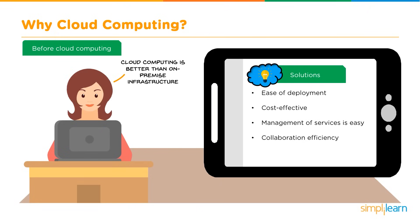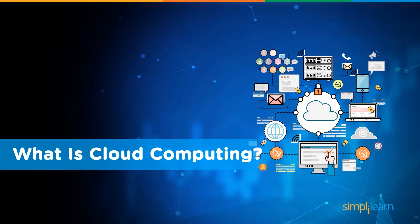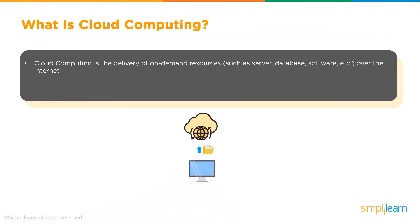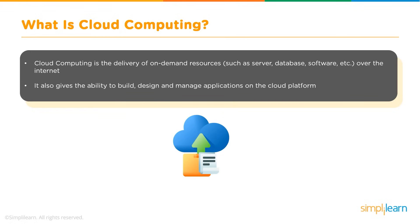Cloud computing is generally better than on-prem infrastructure because of its many advantages. Cloud computing is essentially the delivery of on-demand resources — such as servers, databases, and software — accessible over the internet. As shown in the diagram, a computer or desktop can access any service over the internet. It also provides the ability to build, design, and manage applications on the cloud platform.